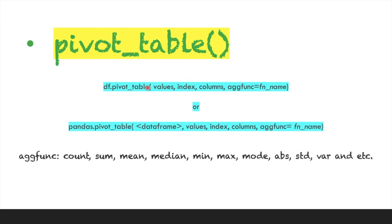The pivot_table function accepts the following parameters: values, index, columns, and an aggregate function. We have already discussed values, index, and columns. The aggregate function allows us to calculate sum, count, mean, median, max, minimum, mode, standard deviation, and more. We assign the desired aggregate function using the aggfunc keyword.